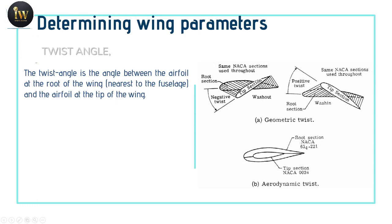Second category is wash in. Wash in means when the root airfoil is at zero degrees and the tip section airfoil is at a positive angle of attack, such positive twist gives a wash in twist.